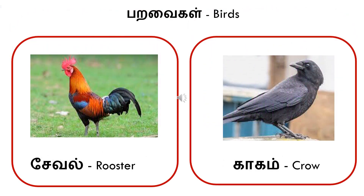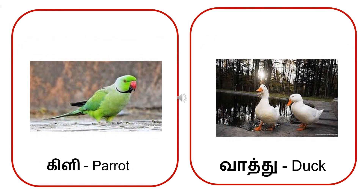Pa-ra-vai-ka-il. Paravaikail is birds. Se-va-il. Seval is rooster. Ka-ha-im. Kaham means crow. Kyi-li. Kyili is parrot. Va-i-tthu. Vattu is duck.